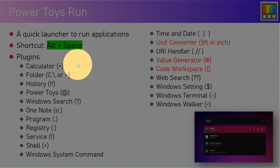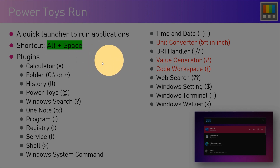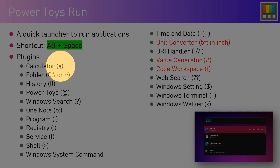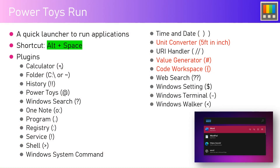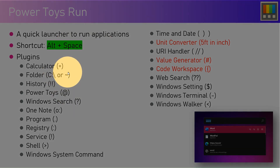For example, if you are presented with a search box and you type the equal-to sign, then type something like three plus seven, it will actually calculate the value.